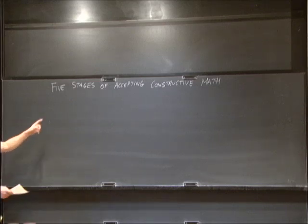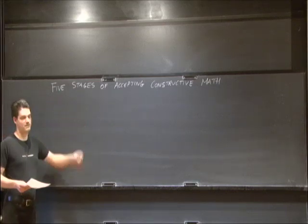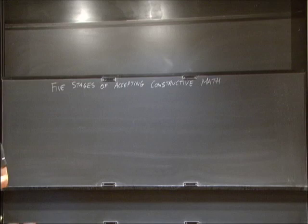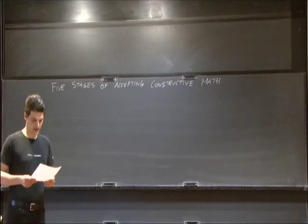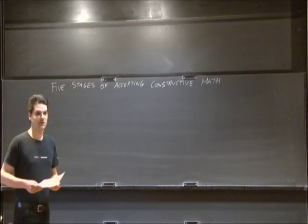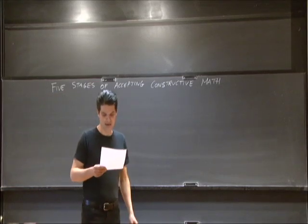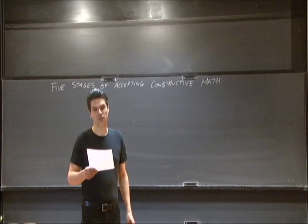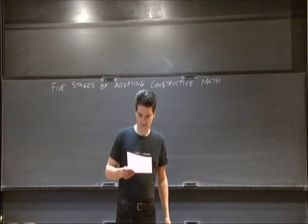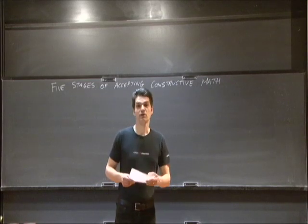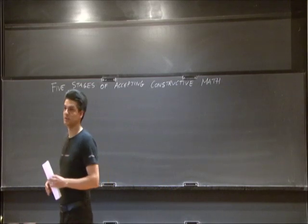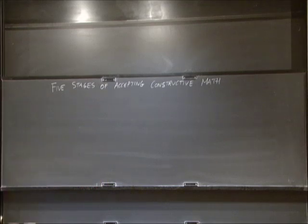Somebody asked me whether this is like nine circles. It's five stages of the psychologist Elizabeth Kübler-Ross, who identified the stages of accepting death: denial, anger, bargaining, depression, and acceptance. Not everyone goes through all these stages, and they don't necessarily come in this order. But they can be applied to many other situations, such as learning.